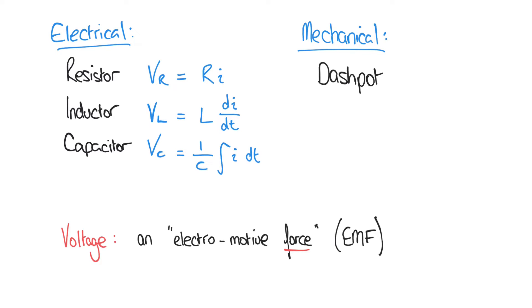They're examples of dashpots in common use. So just as resistors resist current, the movement of electrons in a circuit, dashpots resist movement in mechanical systems.